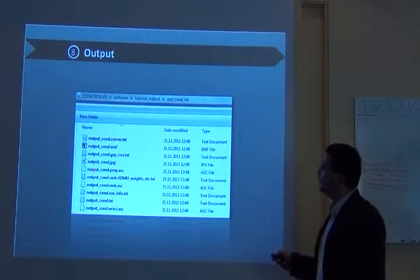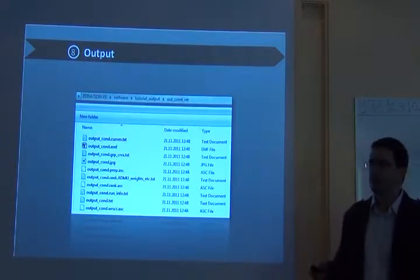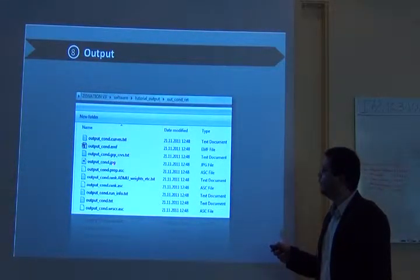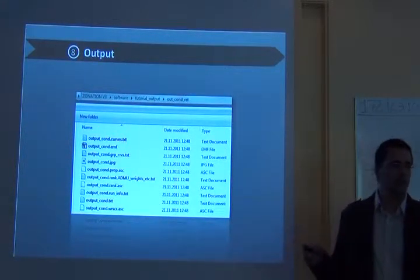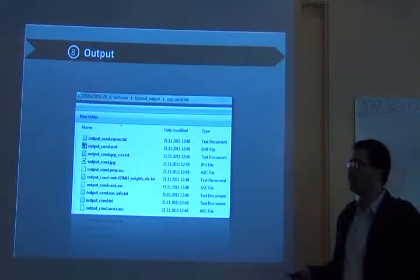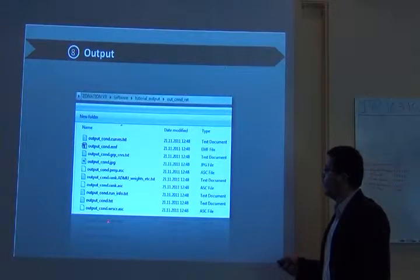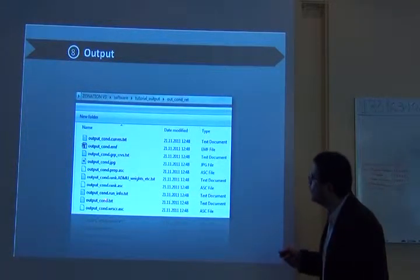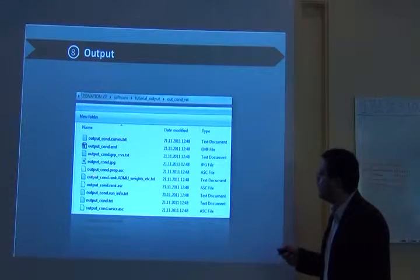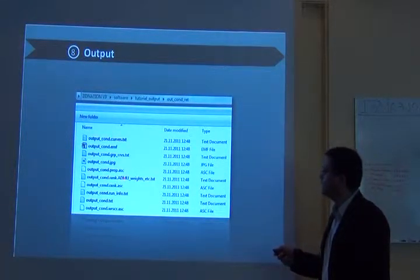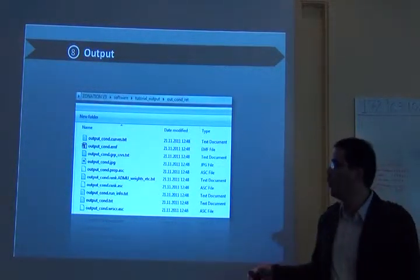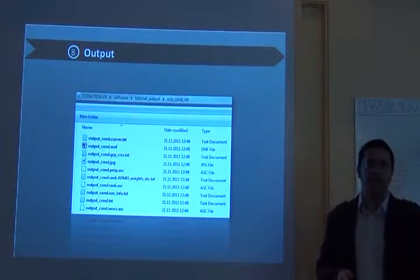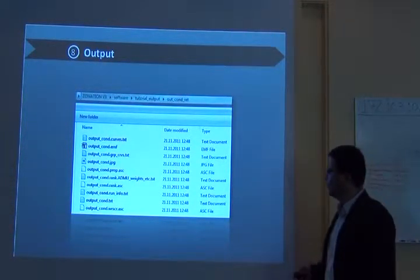And there is the output. You always have those picture files that contain the maps. And the text file with the curves, the curve performance. So you can do it in Excel or R. And then this something, the name you have chosen, dot rank dot txt. That will be the rank of the region. So you can open this file in any GIS software and just do whatever you want with it.